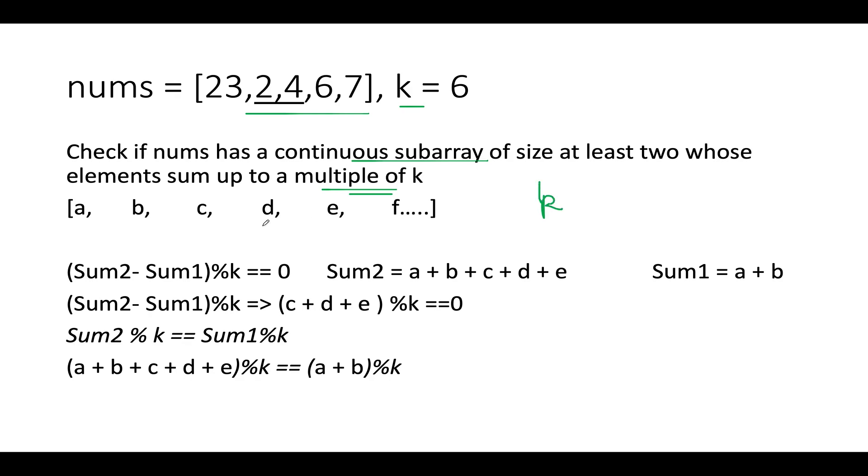So let's consider a hypothetical scenario wherein the sum of these three elements c plus d plus e is a multiple of k and it is a happy case that you found a subarray wherein the sum of these elements turn out to be a multiple of k. Now how are we going to approach this problem?